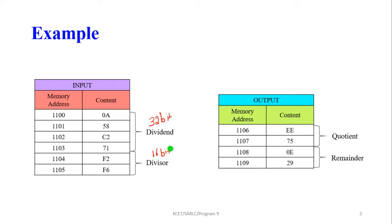We are going to perform the division between the two numbers. The quotient will be stored at memory locations 1106 and 1107, and the remainder will be stored at 1108 and 1109. After division, the quotient is in the AX register and can be moved to that memory location, and the remainder in DX is moved to its memory location.